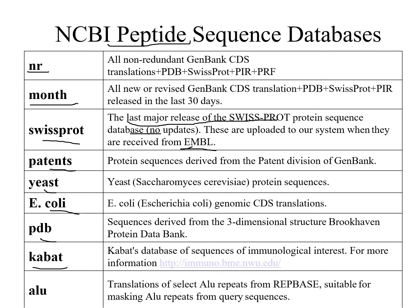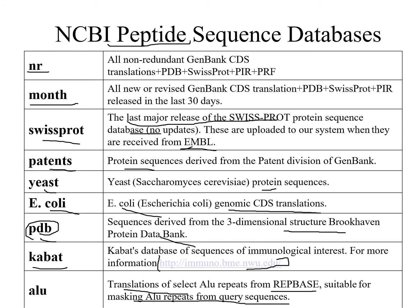PIR protein sequences are derived from the patents of GenBank. Yeast refers to Saccharomyces cerevisiae protein sequences where yeast proteins are stored. EcoSeq stores genomic CDS translation sequences. PDB — the Protein Data Bank — stores three-dimensional structure protein sequences. KABAT is the database of sequences of immunological interest. ALU contains translation of select ALU repeats from RepBase, used for masking ALU repeats from query sequences.